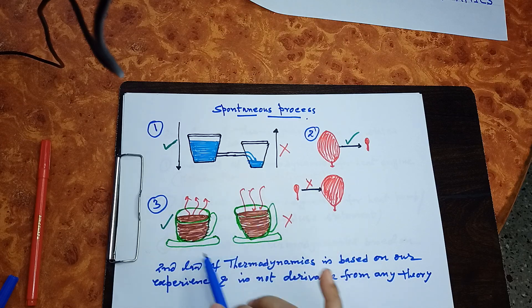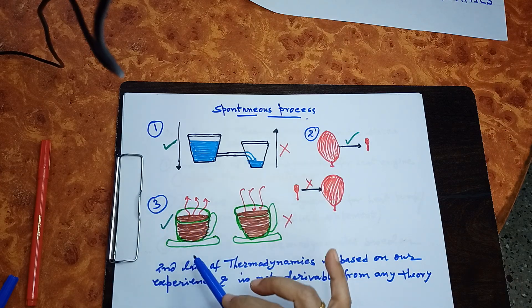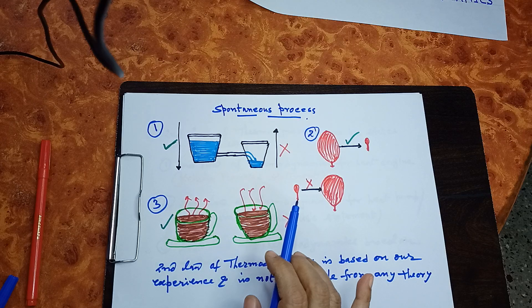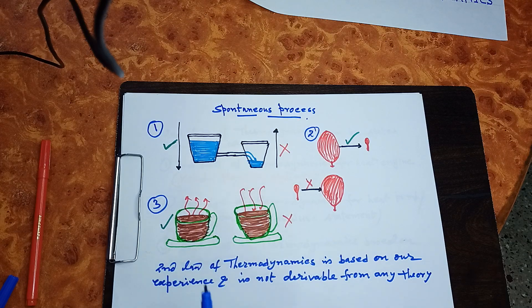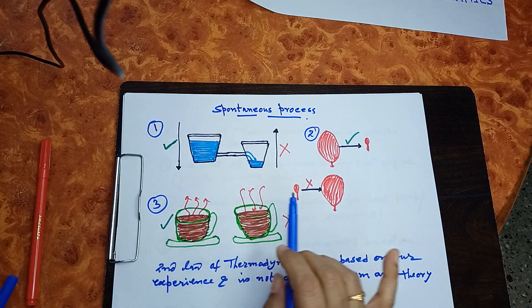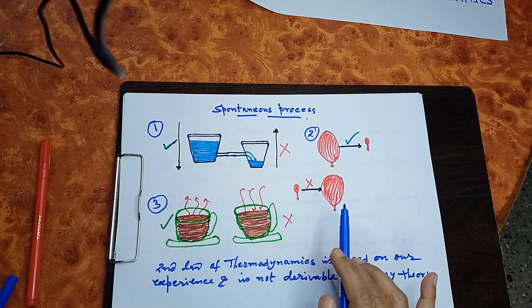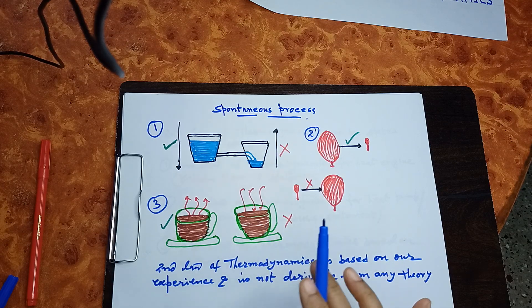According to the First Law, these things are possible — one body releases heat and another absorbs it. But in our everyday experience, we find that this reverse flow is not possible. Heat will flow from the hot body to the cold body. These spontaneous processes occur without any external aid. To explain or decide whether a process is spontaneous and in which direction it will proceed, that comes from the Second Law of Thermodynamics.